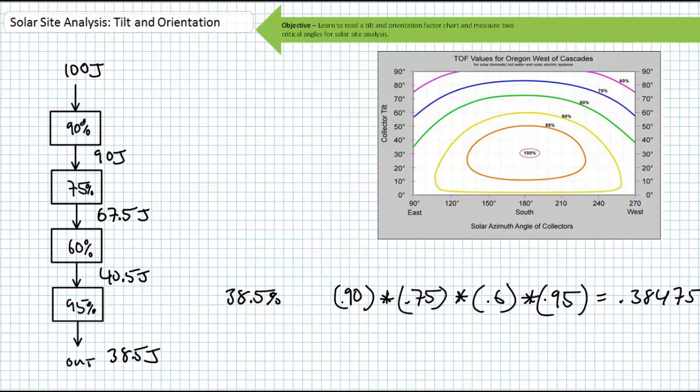Consider another system with 100 subsystems where each subsystem is 99% efficient. This is in effect equivalent to multiplying 0.99 by itself 100 times or 0.99 to the 100th power. Therefore, our total system efficiency is only 36.6% efficient.